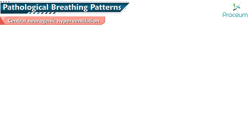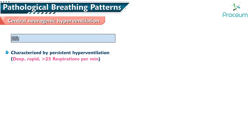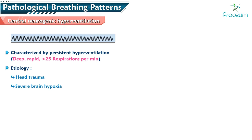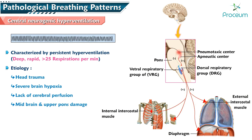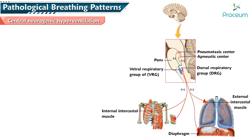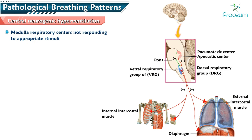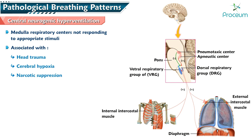Central neurogenic hyperventilation is characterized by persistent hyperventilation and may be caused by head trauma, severe brain hypoxia, or lack of cerebral perfusion. It is caused by damage to the midbrain and upper pons. The medulla respiratory centers are not responding to appropriate stimuli, which is associated with head trauma, cerebral hypoxia, and narcotic suppression.